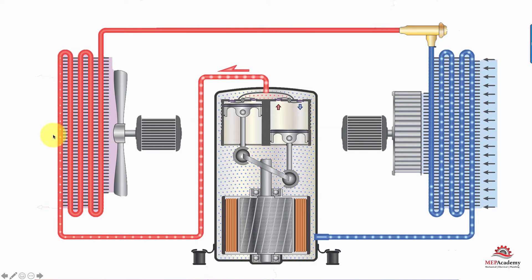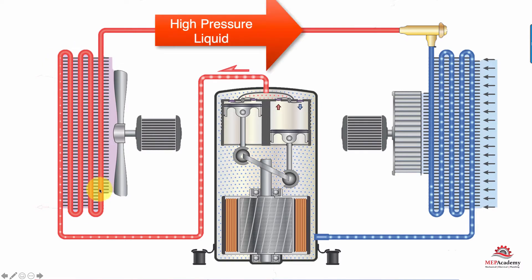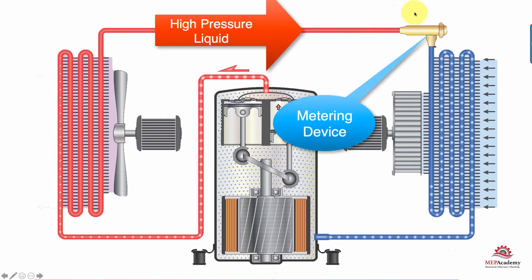It's cooled by the air, so the gas condenses into a liquid — you don't see these dots anymore. This gas represents gas, so this is liquid now going through the tubes. And you have to have liquid when you get to your metering device.